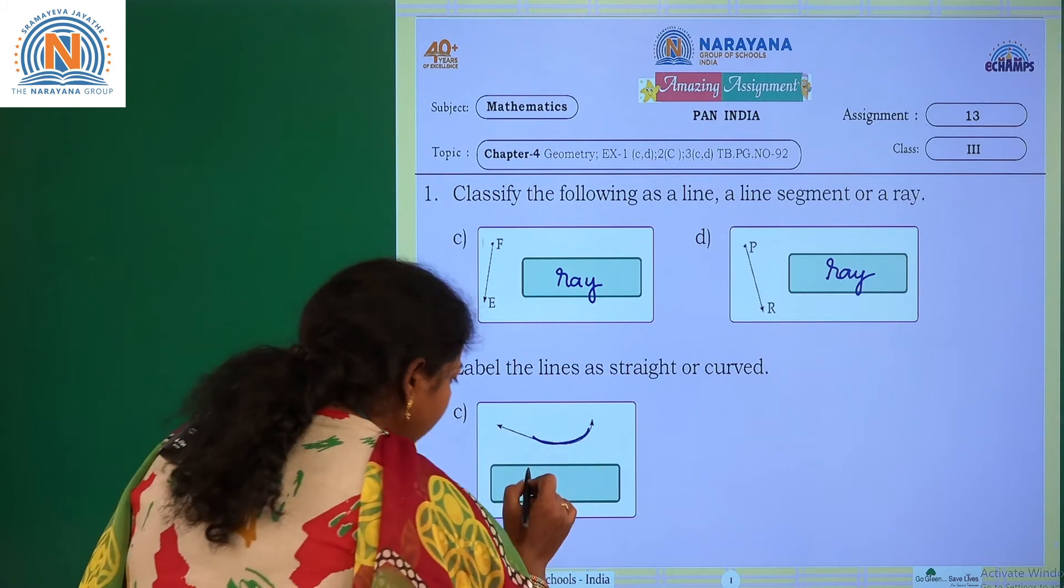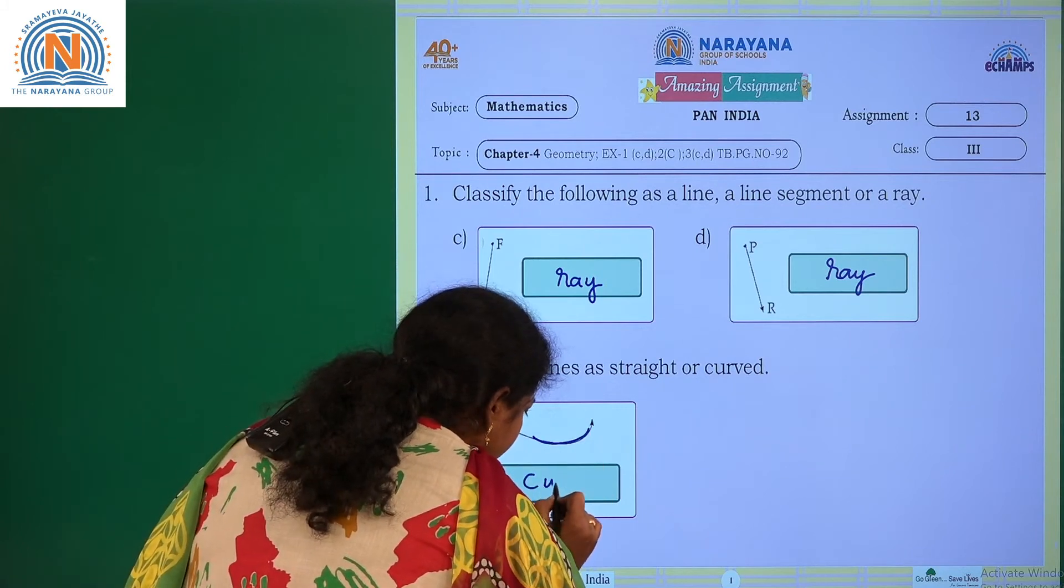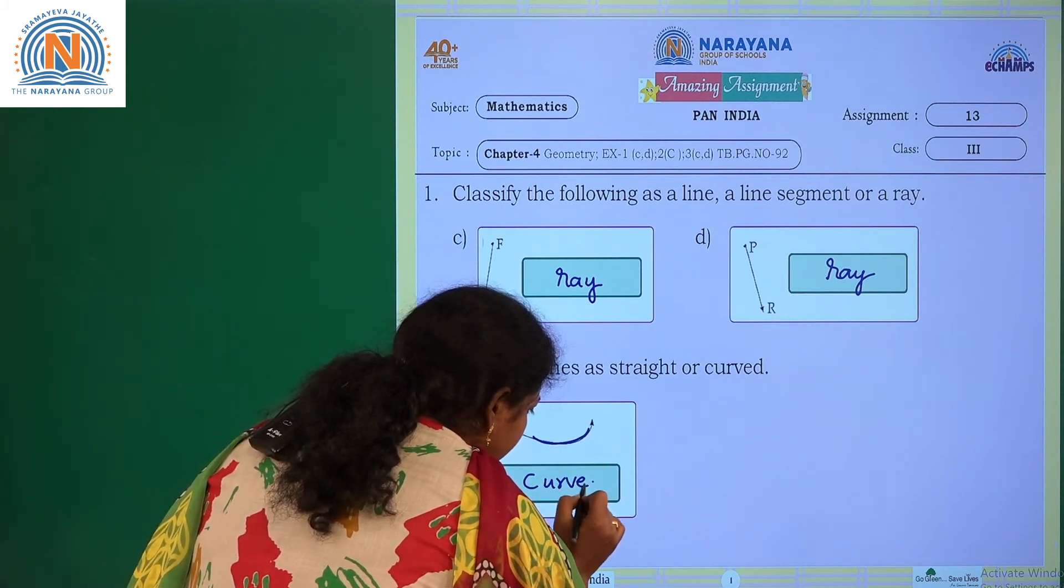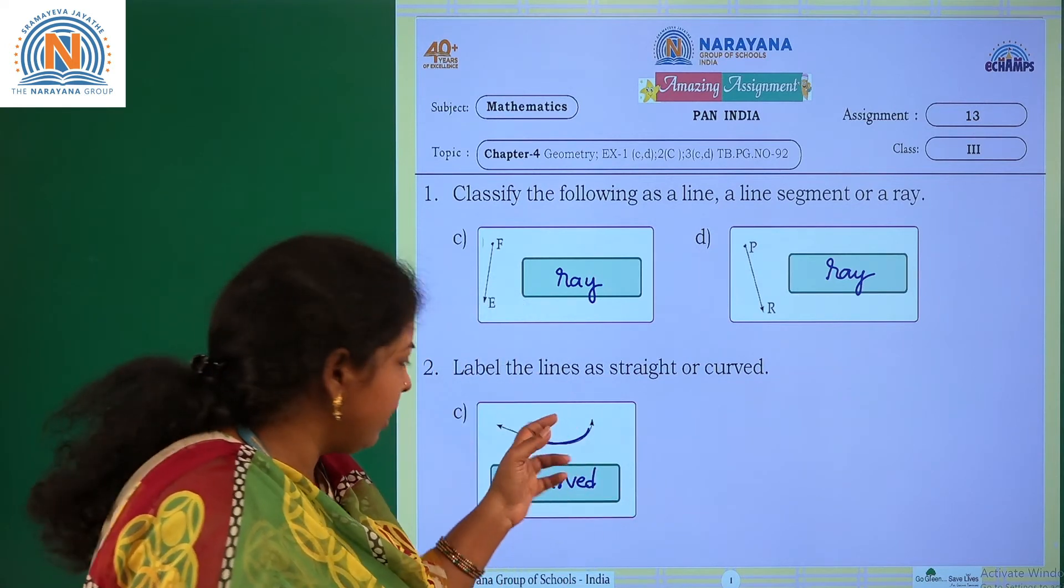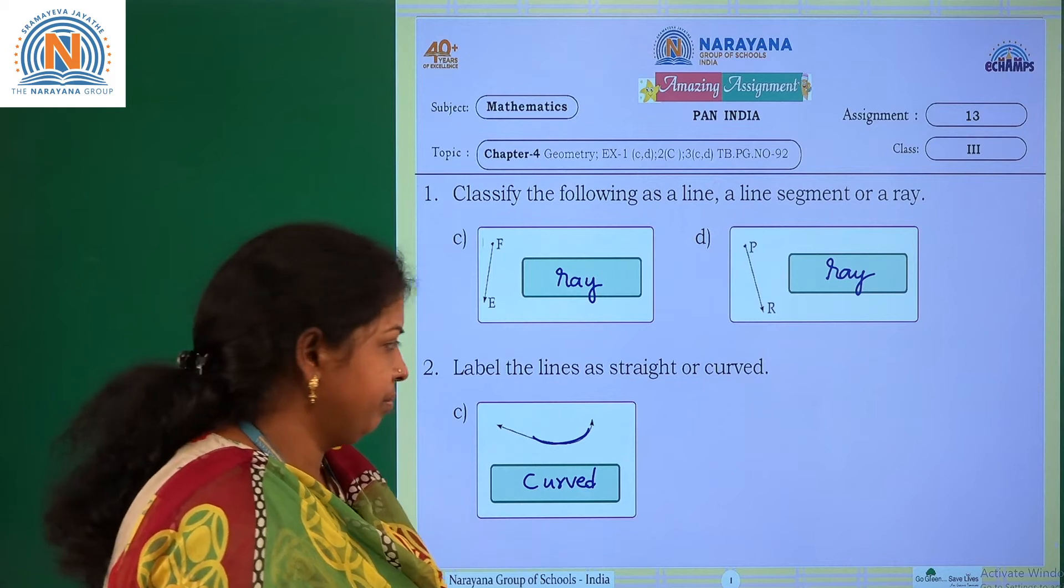You have to write here curved. So the given line is a curved line.